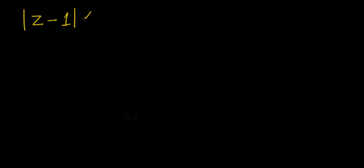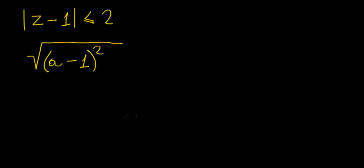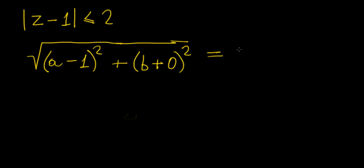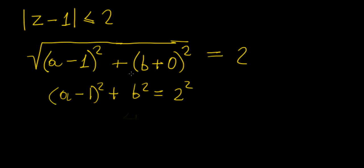Let's take the region where the magnitude of z minus 1 is less than or equal to 2. This is a bit more complicated. We haven't dealt with this before, so let's expand it out. We have a real number here which has to be taken into account in the real part of z. This is like adding two complex numbers. So we get the quantity a minus 1 squared plus b squared equal to 2 squared. That is also the equation of a circle.